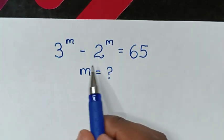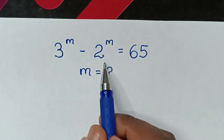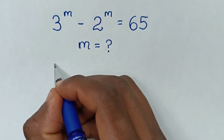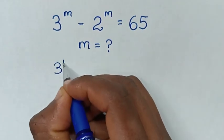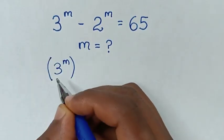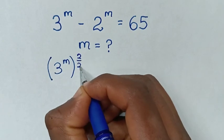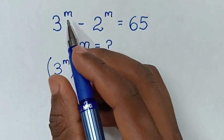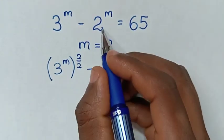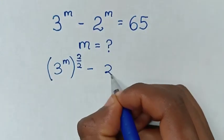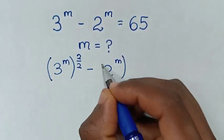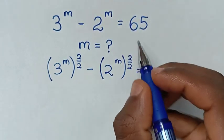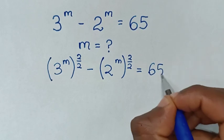From here, 3 power of m minus 2 power of m — we make this in the form of a perfect square. So it will be 3 power of m bracket, we multiply by power of 2 over 2. Because 2 over 2 is 1, and 1 times m is the same as power of m. Then minus 2 power of m bracket, we multiply by power of 2 over 2, is equal to 65.